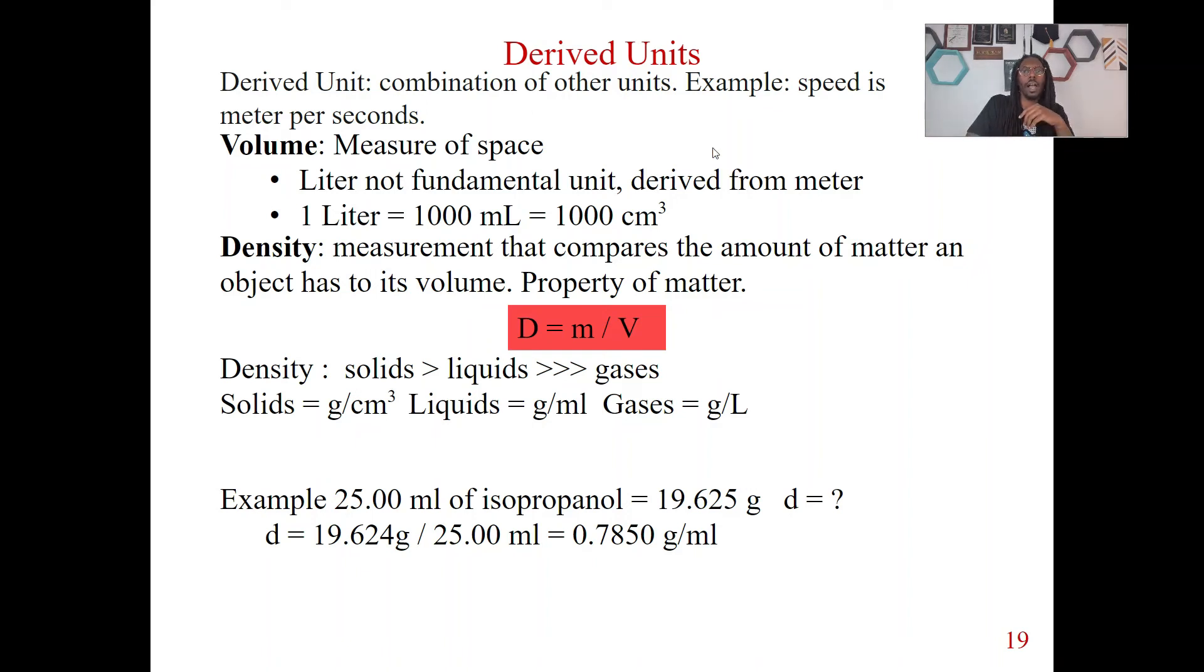Derived units are basically a combination of other units. A good example of this is if we think about speed. Speed is meters per second. When we're talking about speed, we're talking about how far something is going over a certain time frame. Now, let's talk about some other units.